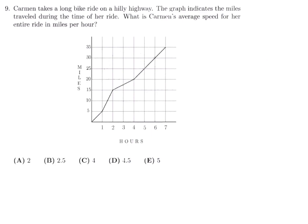Carmen takes a long bike ride on a hilly highway. The graph indicates the miles traveled during the time of her ride. What is Carmen's average speed for her entire ride in miles per hour? Speed is equal to distance over time. The distance for her entire journey is right here, it's 35. And then the time for her entire ride is seven hours.